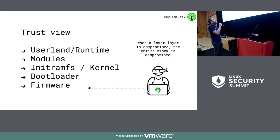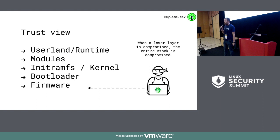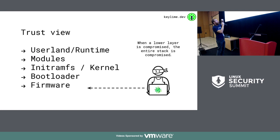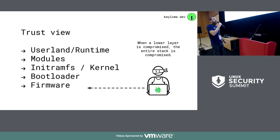All the way up until we have our user land and runtime — perhaps a container runtime or virtual machines. The problem is that if a lower level of the stack is compromised, the higher up the stack you are, it's very difficult to know about that. You're at risk, but it's very difficult to establish that a compromise has occurred.